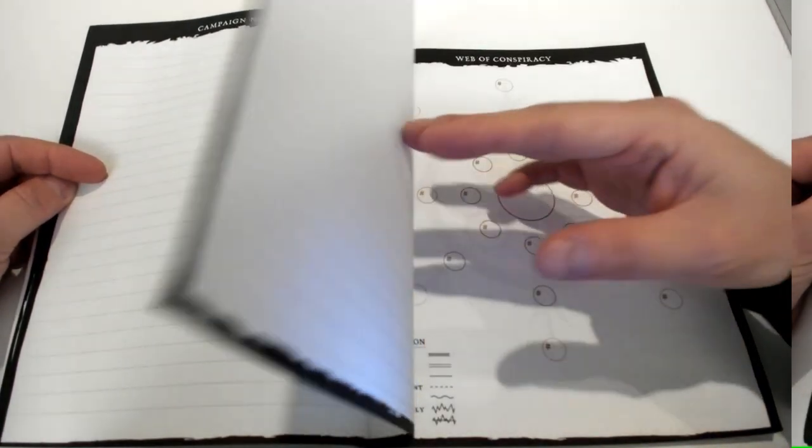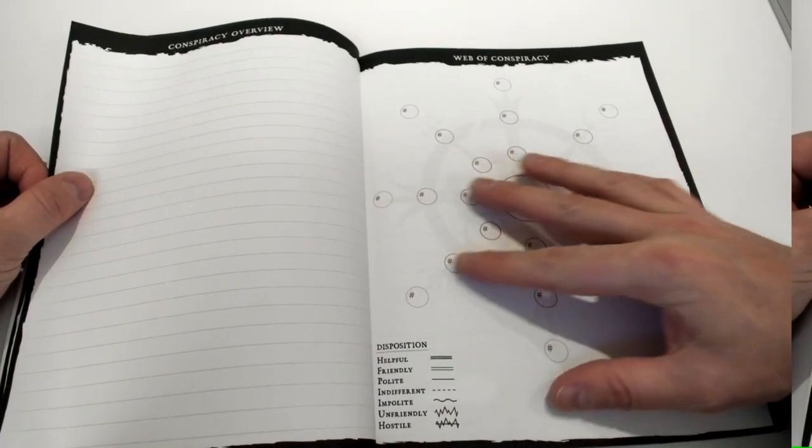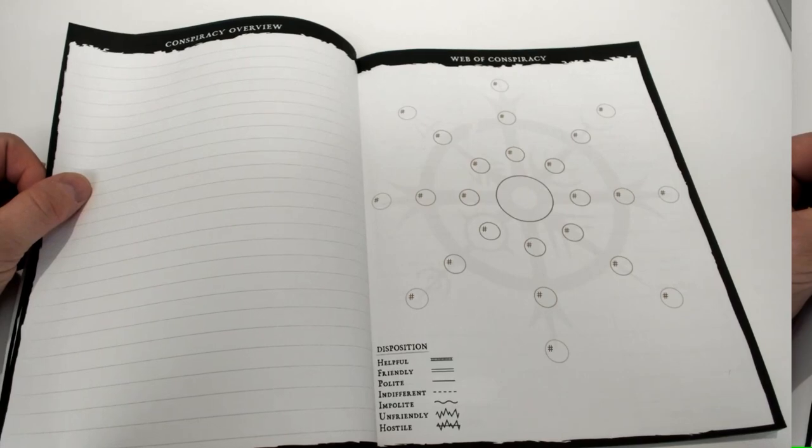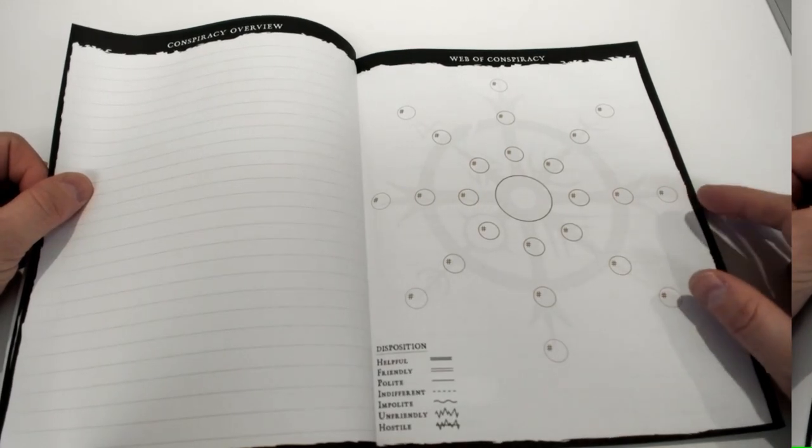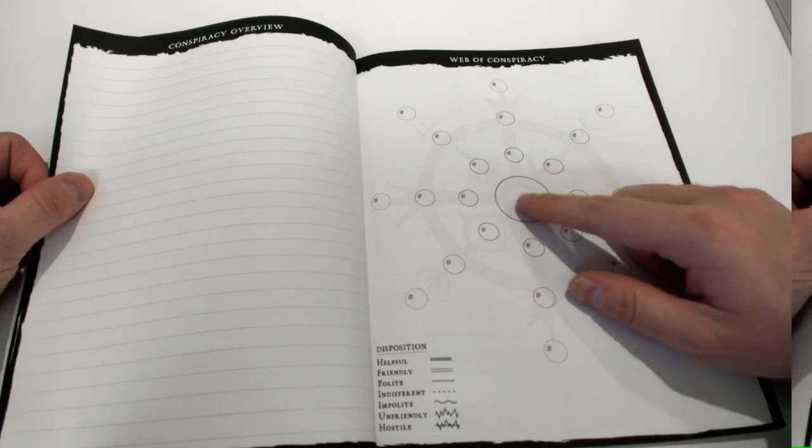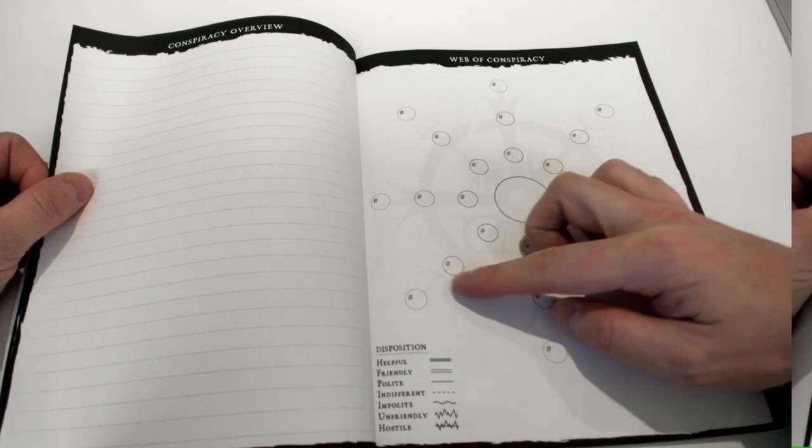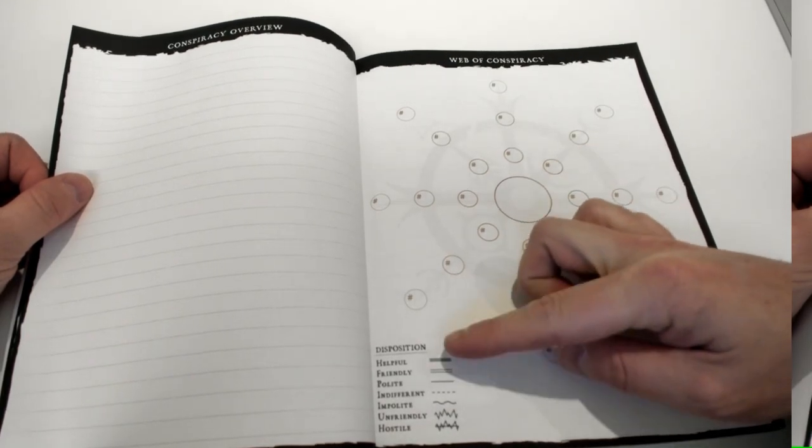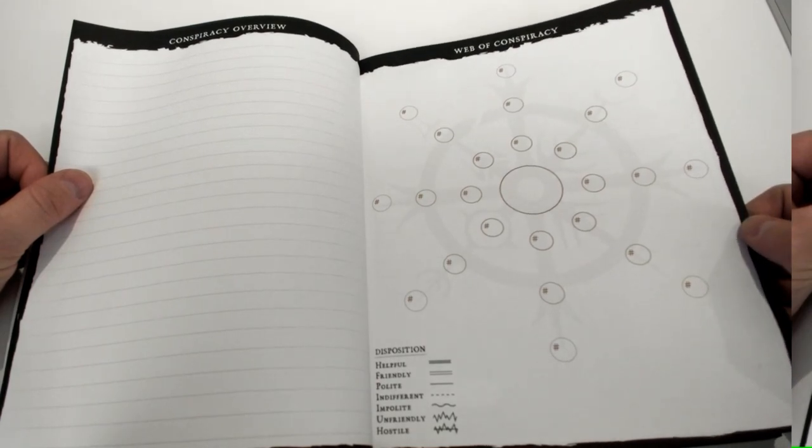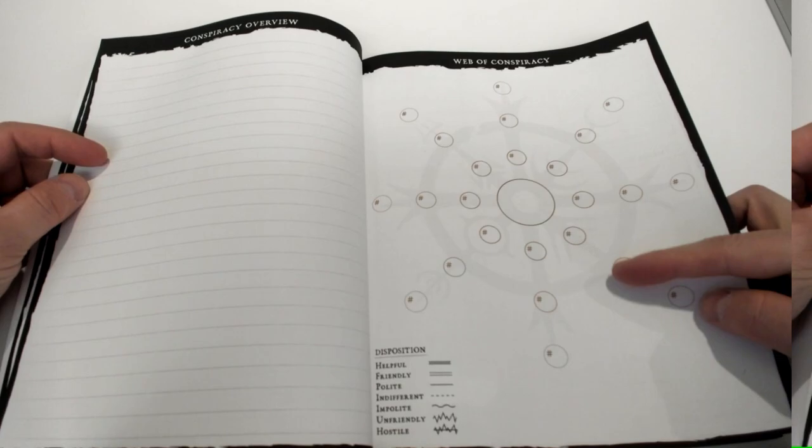Then we continue moving on to our conspiracy overview, and we have this big beautiful web of conspiracy flowchart where you can pencil in different numbers, including the person who's the center of the conspiracy. You can begin to show dispositions between each group using this legend down here that follows the same framework we've showed in Zweihander.